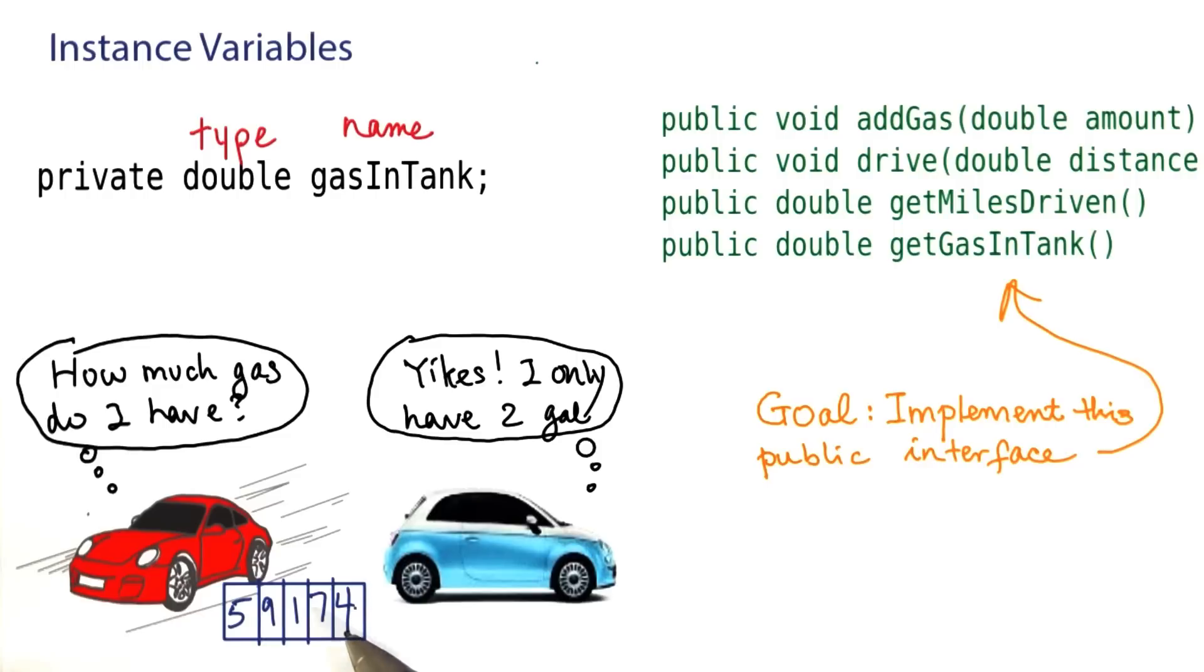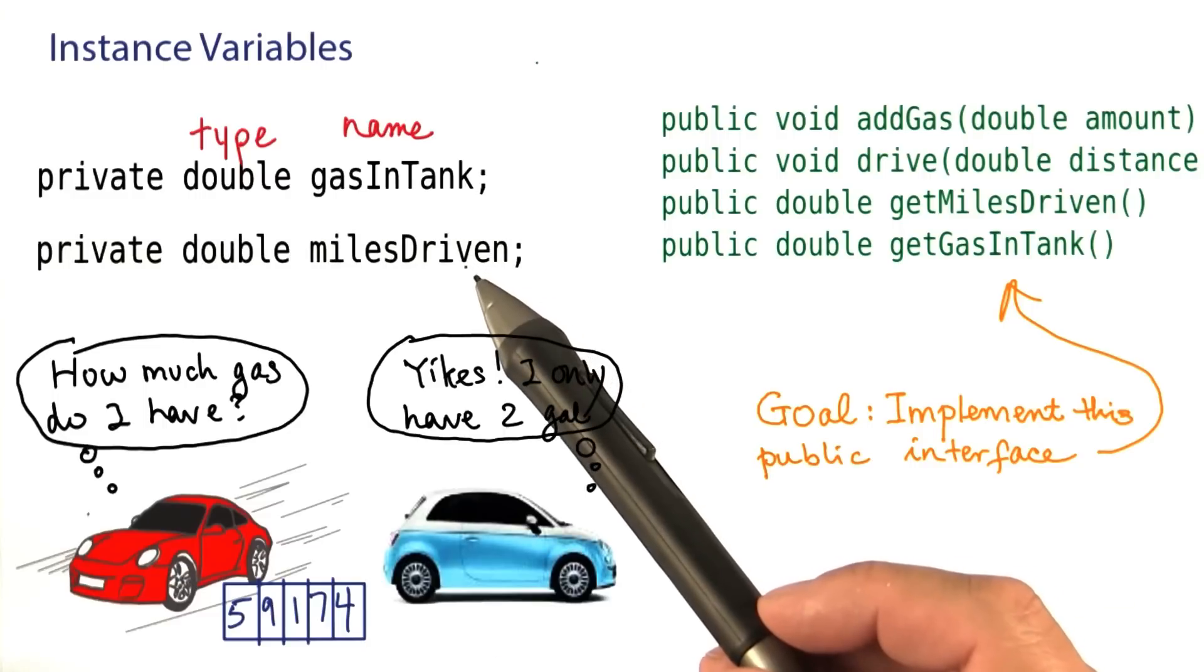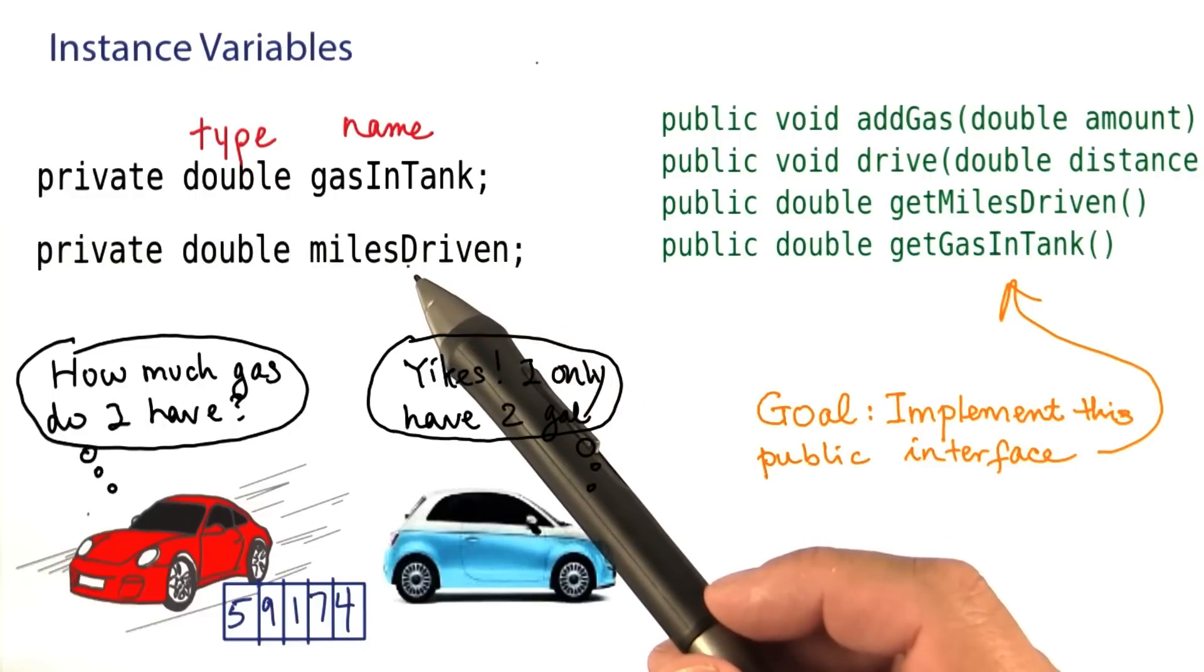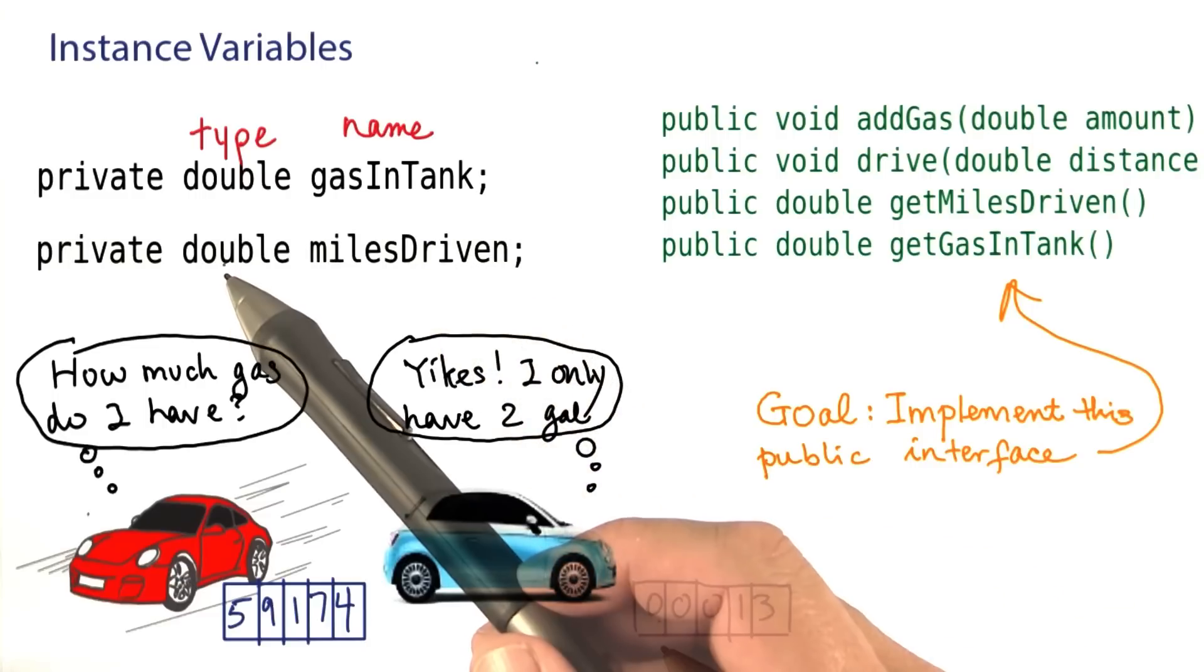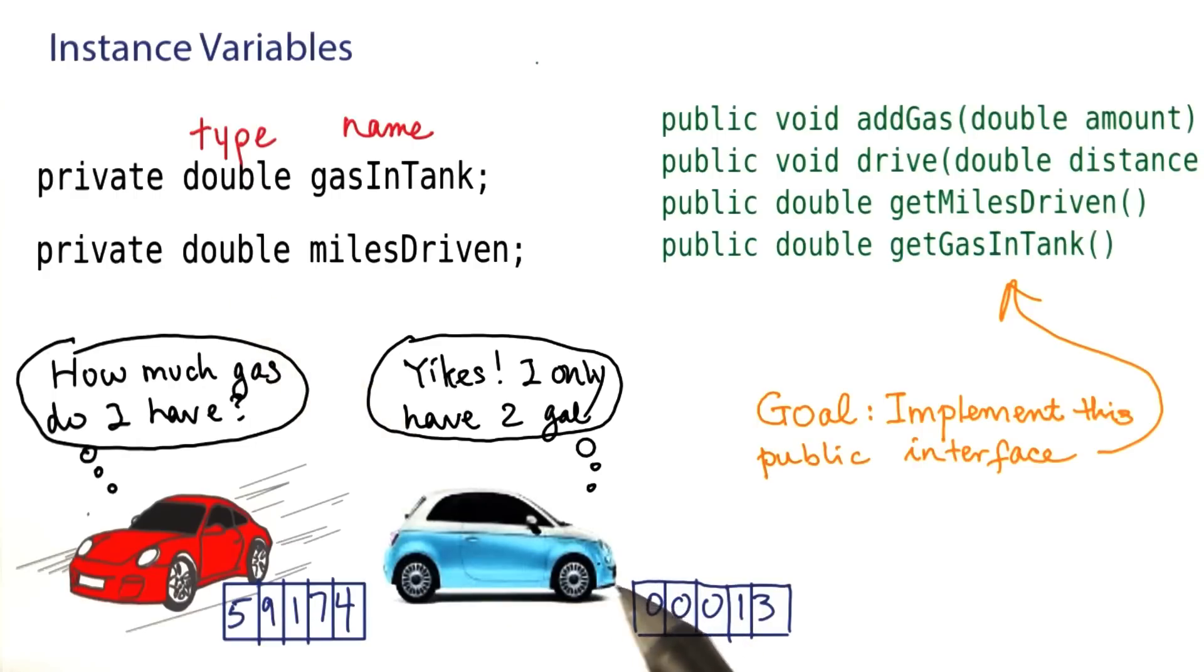Now there's another thing that each car object should remember, namely its mileage. Here is how you can define the variable. We give it a name, milesDriven. Its type, it's again a number. And once again, each instance of the car class has its own value. So it needs its own copy of that variable.